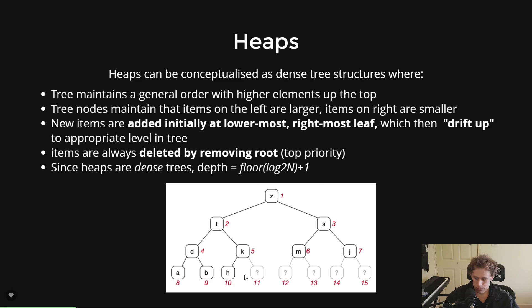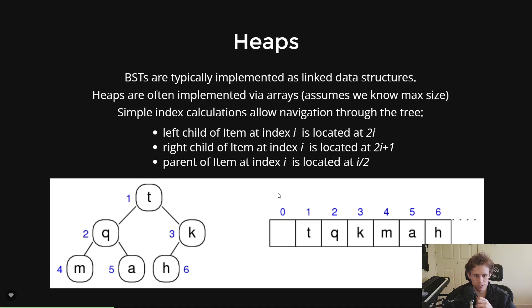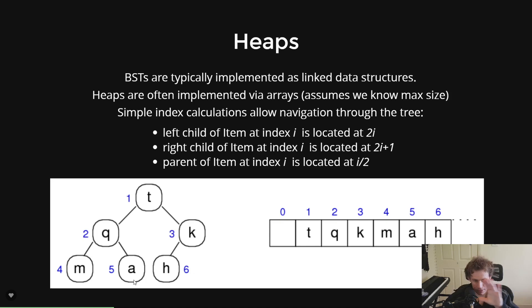Heaps are often implemented as arrays. We take a tree structure and put it into an array in level order. So if I have a tree with T, Q, K, M, A, H in those positions, I insert them into the array in that order. A couple of details: the zero index is missing — we never put anything in the zeroth element based on the general implementations.